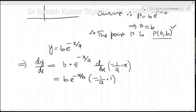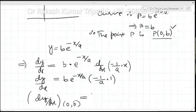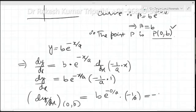The slope at the y-axis at point (0, b): dy/dx = b·e^(−0/a)·(−1/a). Calculating this gives minus b upon a. So the slope of the tangent is −b/a.